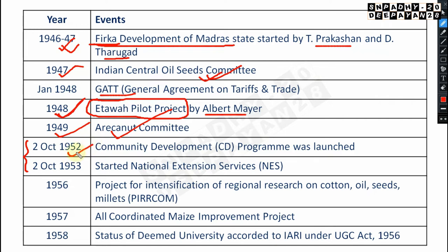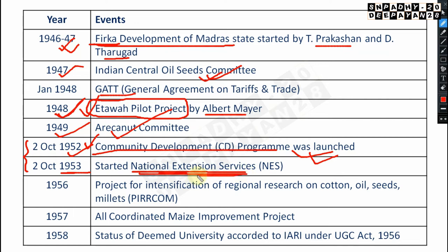On 2nd October 1952, the Community Development Program was launched — very very important. Similarly, on 2nd October 1953, the National Extension Service (NES) was started. The Etawah Pilot Project, Community Development Program, and National Extension Service are all very very important to remember.